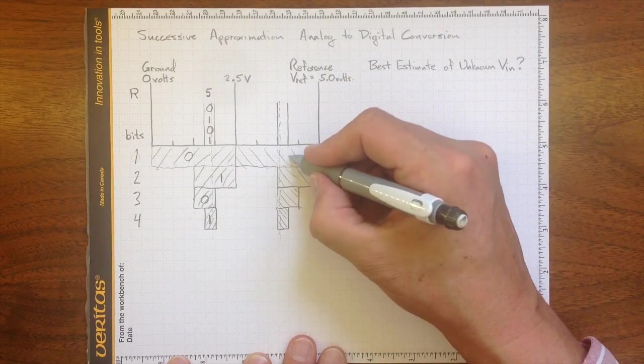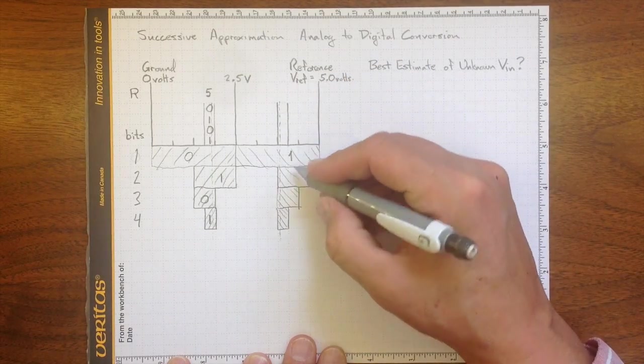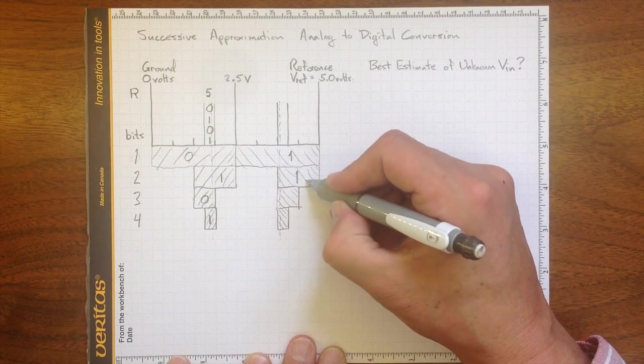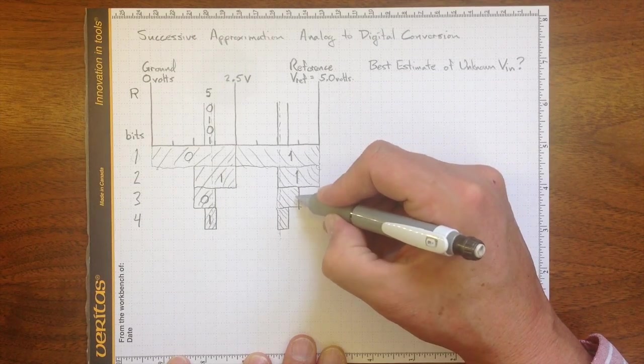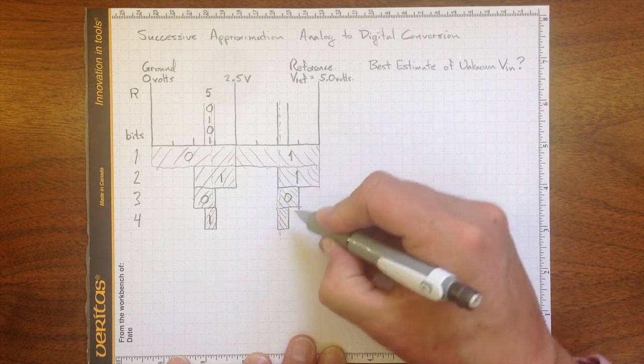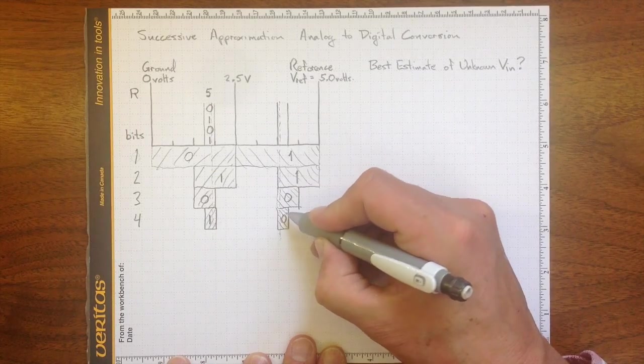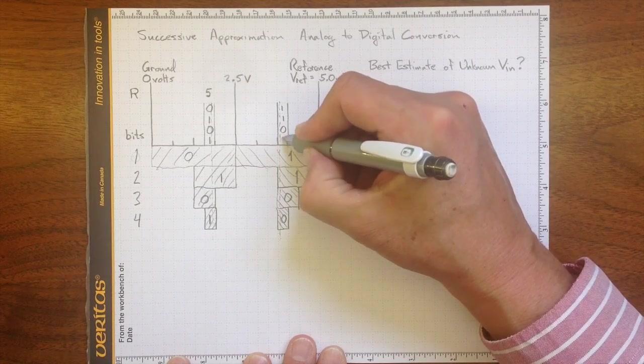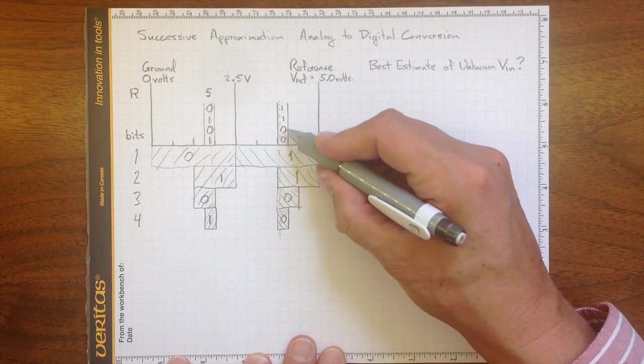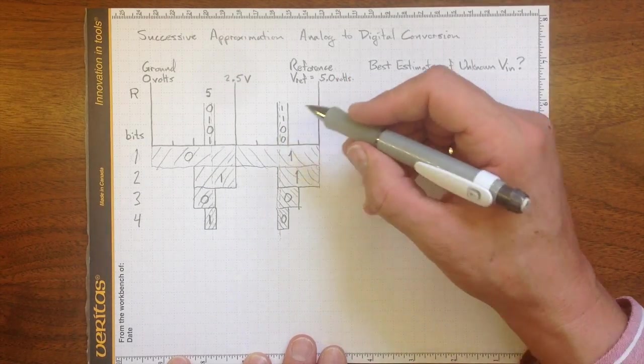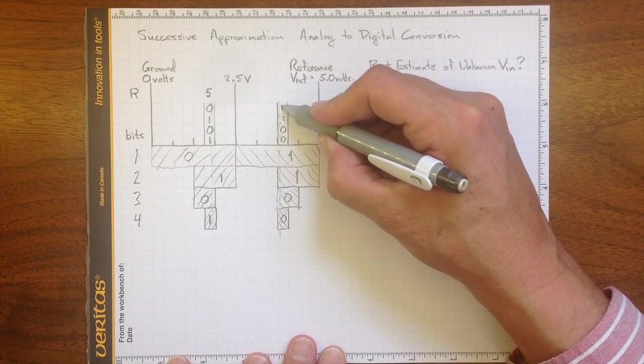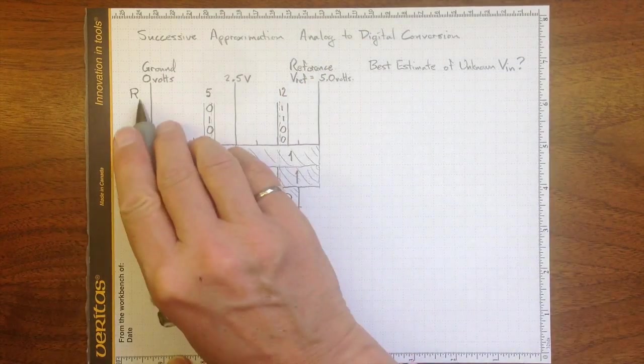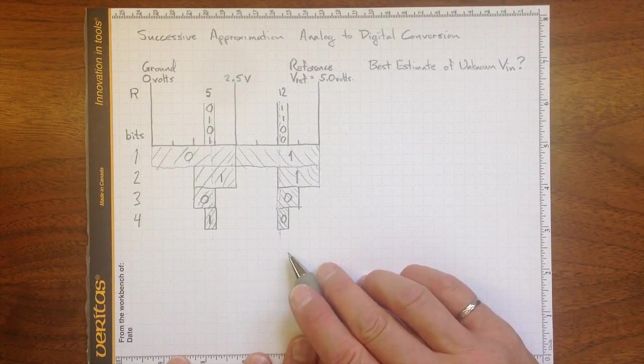And we test it again against the halfway point, and it's still lower, so we know it lies somewhere in that region in there. We got a one on the first try, the next one was also a one because it was higher than the mid-range voltage when we did our comparison. But the next time it was a zero, and the next time it was a zero. So 1100, 0 times 1 plus 0 times 2 plus 1 times 4 plus 1 times 8 is 12. So our result for this conversion is 12.